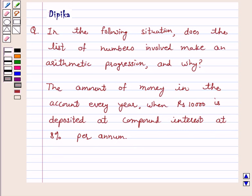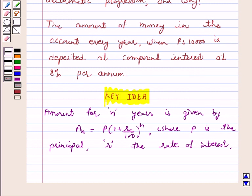So let's start the solution. We know that an arithmetic progression is a list of numbers in which each term is obtained by adding a fixed number to the preceding term except for the first term. And also amount for n years is given by An = P(1 + r/100)^n. Here P is the principal, r is the rate of interest.